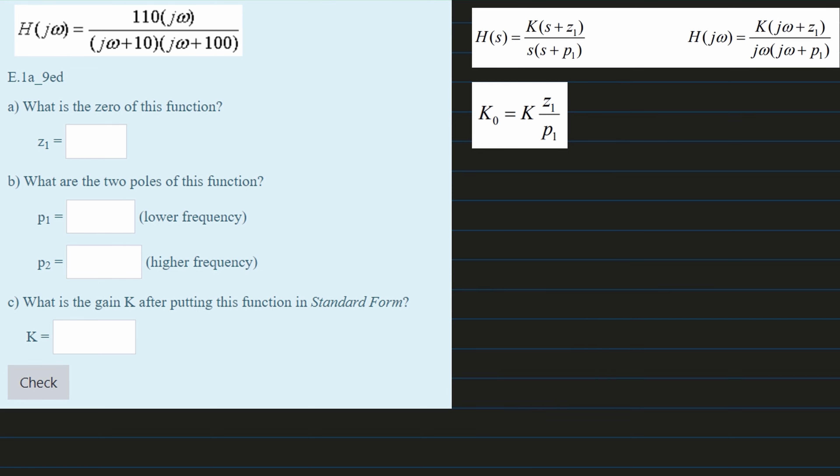We're given the following H(jω). We're asked what is the zero of this function. We are first finding z1.